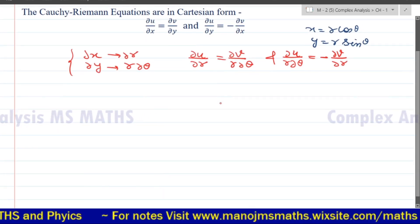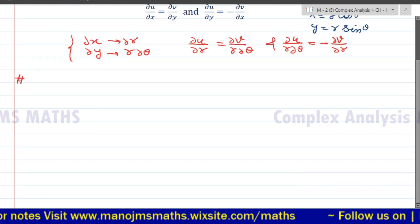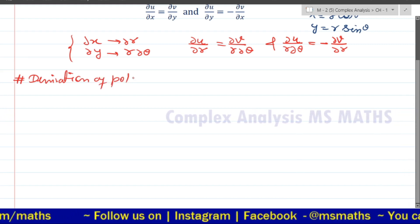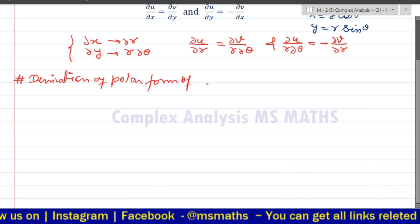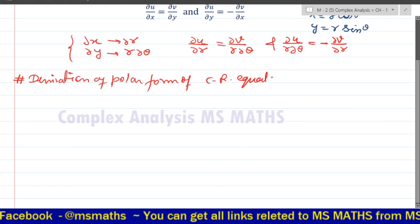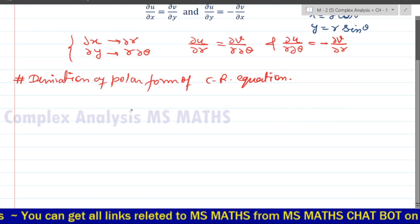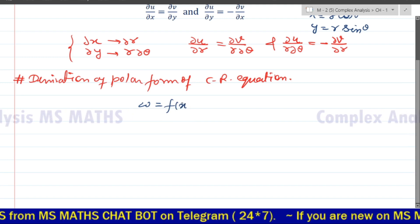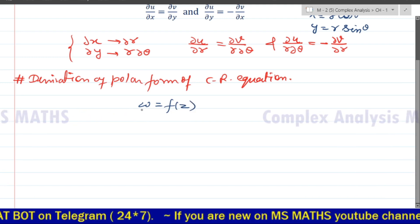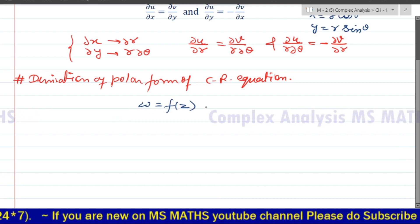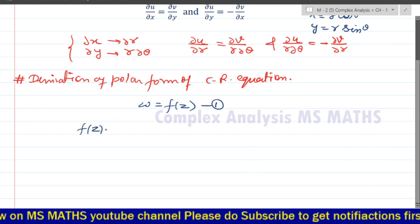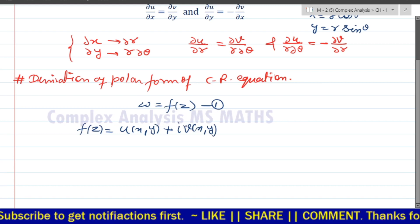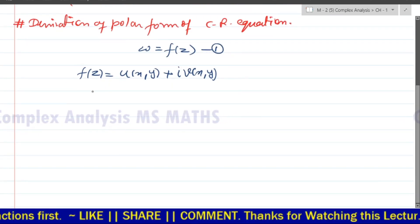Now we have to talk about this derivation — we have to derive the polar form of the Cauchy-Riemann equation. So consider that w is equal to f(z). We know that f(z) is equal to u(x, y) plus iota v(x, y). This is the Cartesian form.